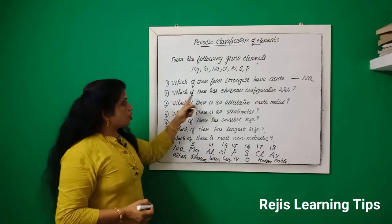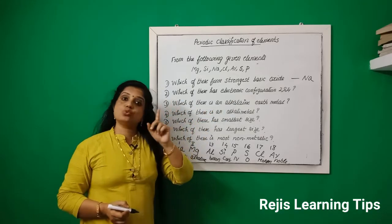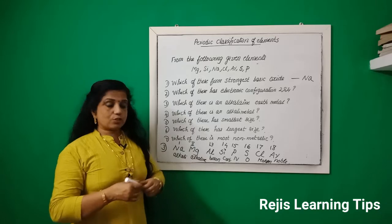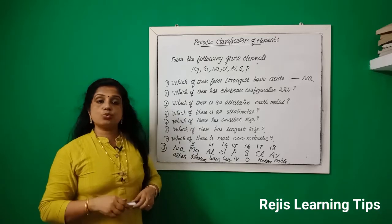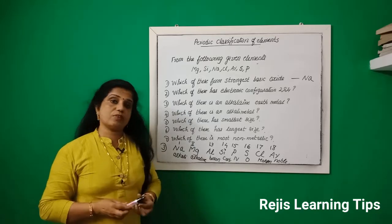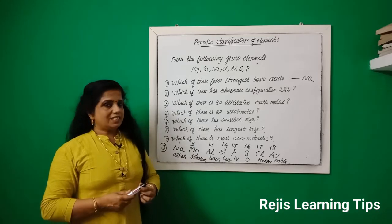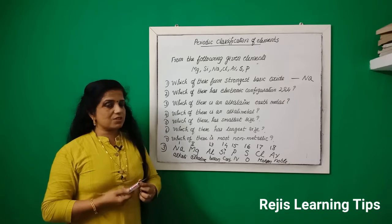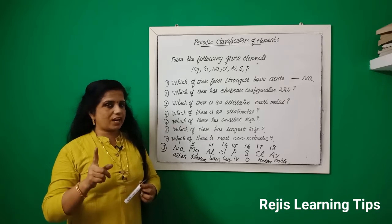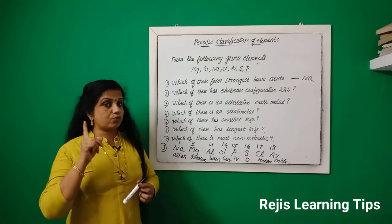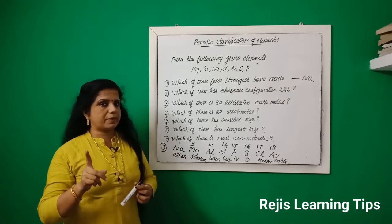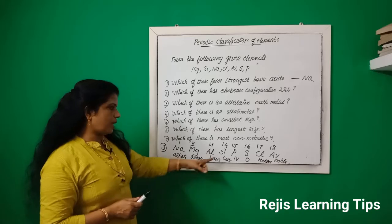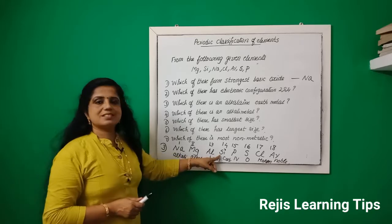Which of these has electronic configuration 2,8,4? We have studied 2,8,4 — the outermost shell has 4 electrons, placing it in the 14th group. The 14th group element here is silicon.